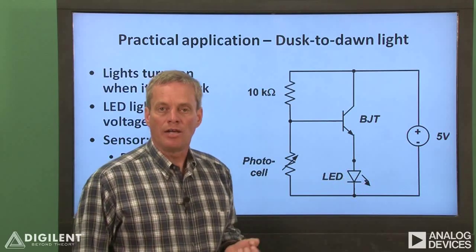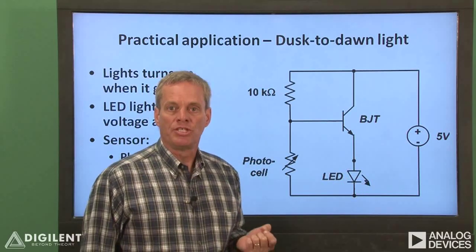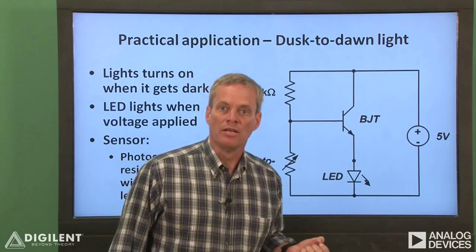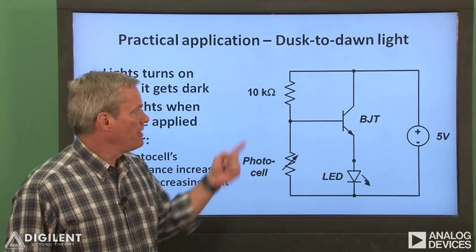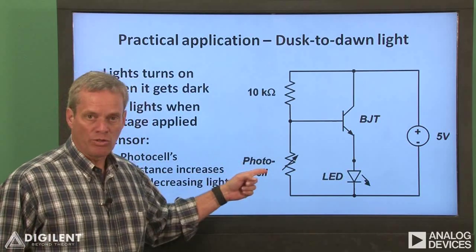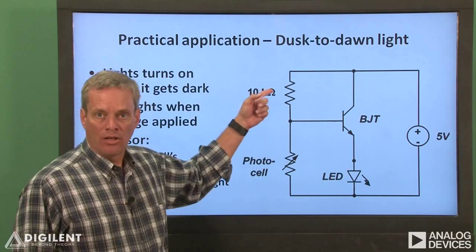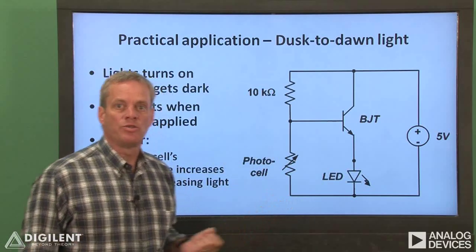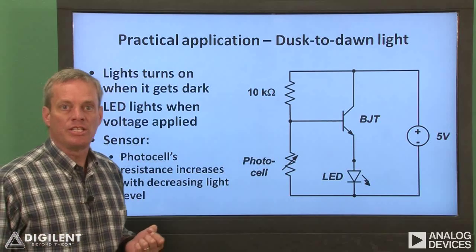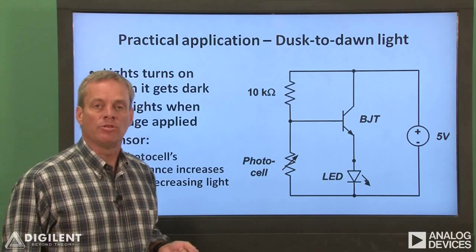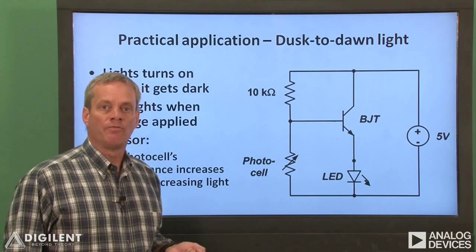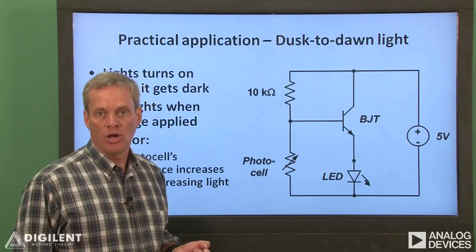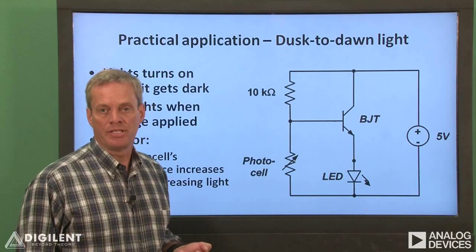What we need to do is cause the base voltage to be high when the room is dark and low when the room is light. We'll accomplish this with a combination of a photocell and a 10 kilohm resistor. The photocell is a device whose resistance changes with light level. When the light level is high, the photocell's resistance is low, and when the light level is low, its resistance is high.